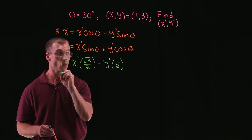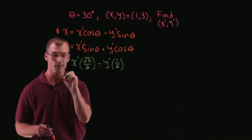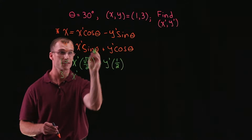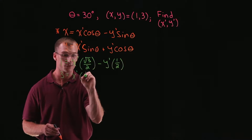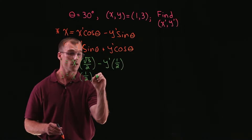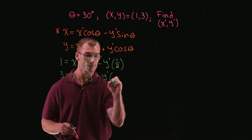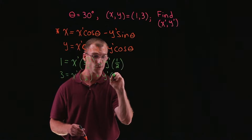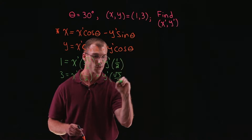And the next equation: y, which is equal to 3, equals x prime times sine of theta, or sine of 30 degrees, which is 1 half, plus y prime times cosine of 30 degrees, or root 3 over 2.